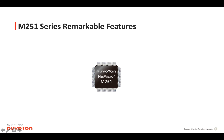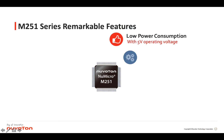Because there are so many features inside the M.251 series, we highlight 10 major remarkable features. The first is low power consumption — it supports not only 1.8V or 3V, but also up to 5V operating voltage. For PWM, we support 24 channels plus 4 timers, totaling 28 channels. With PLL, we can support up to 96 MHz high-speed PWM, which can be used for lighting control or motor control.